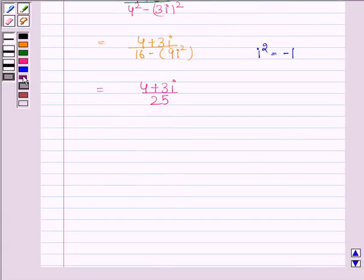Therefore, the multiplicative inverse of 4 minus 3 iota is 4 upon 25 plus iota 3 by 25. This is our required answer.